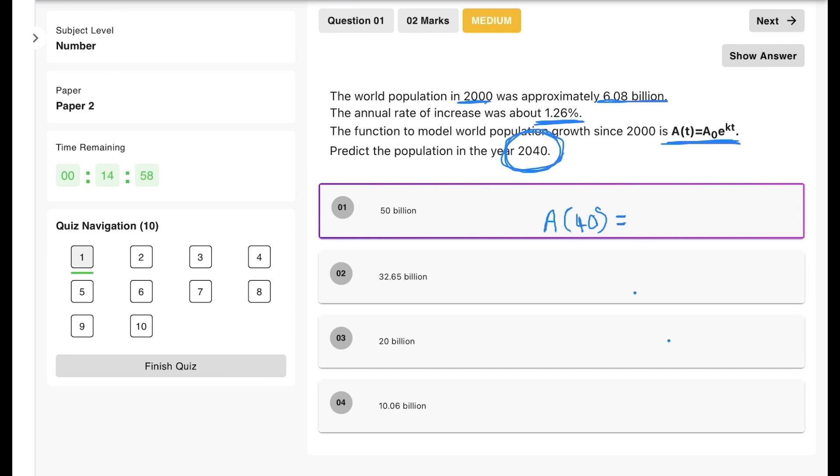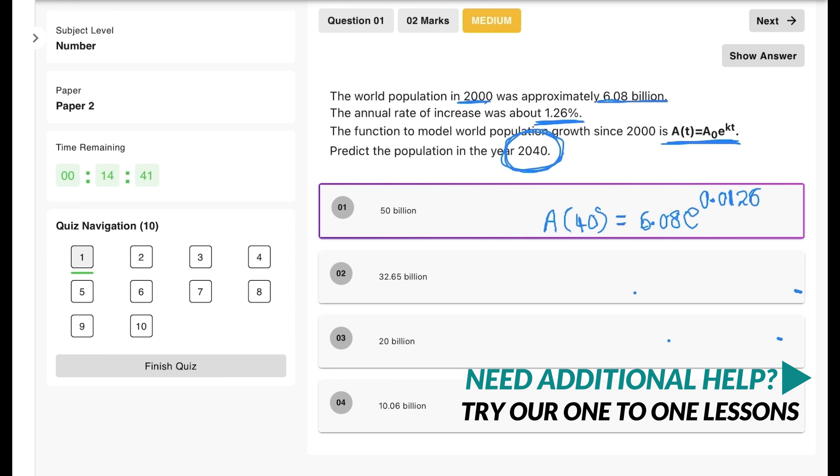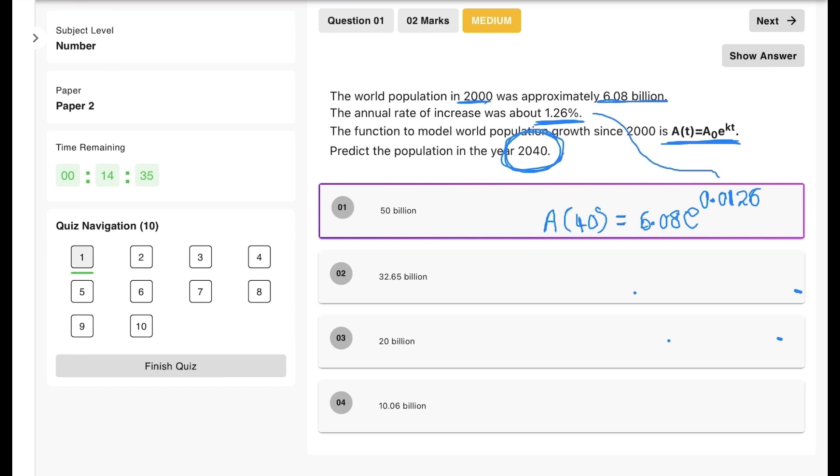The initial population is 6.08 billion and I'm going to put e to the power of, so 1.26% is the percentage we're looking at here, so we can convert that into decimal form. That is 0.0126 and that into 40 because we want it to be 40 years. So 40 times 0.0126 and e to the power of that answer.